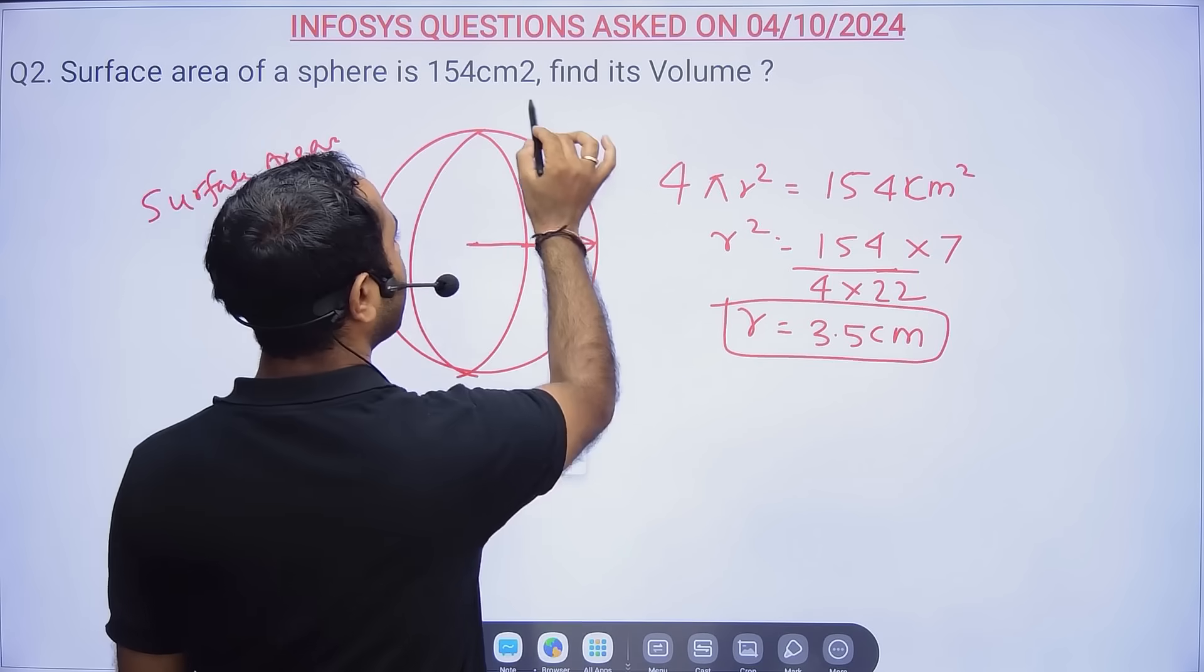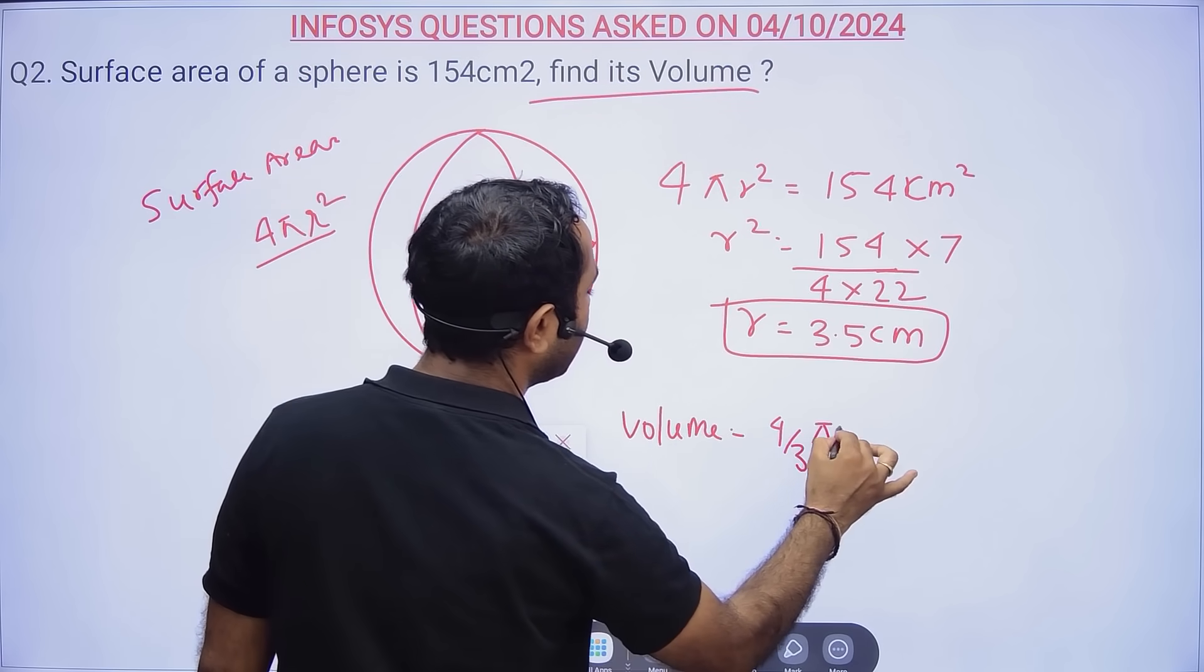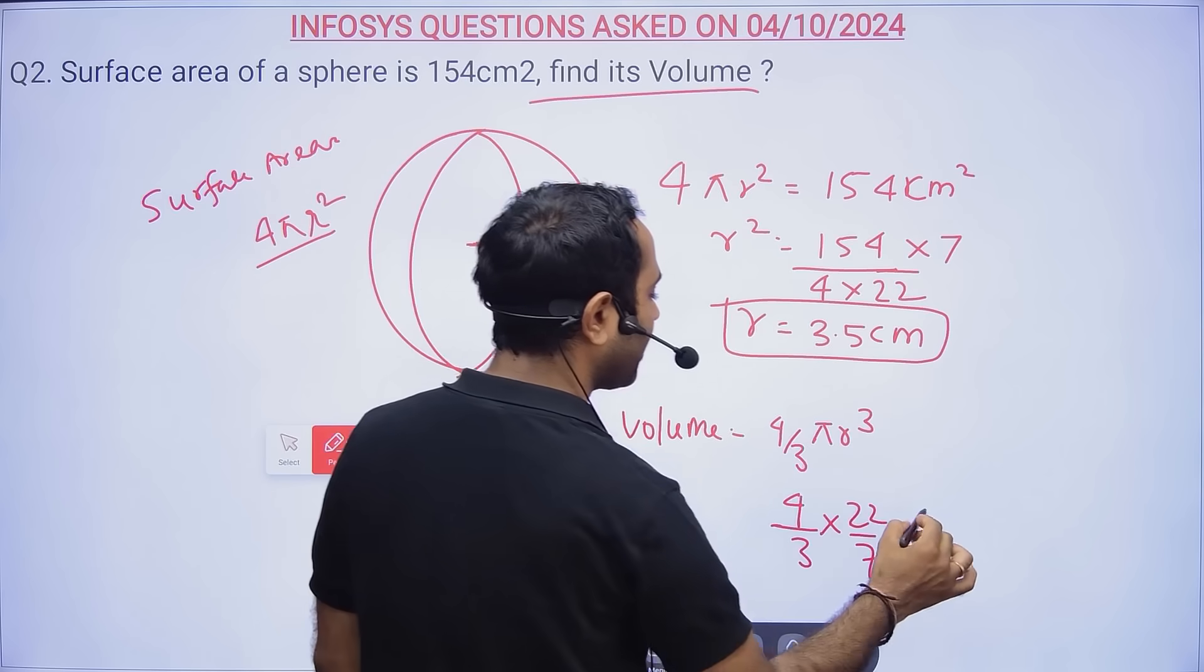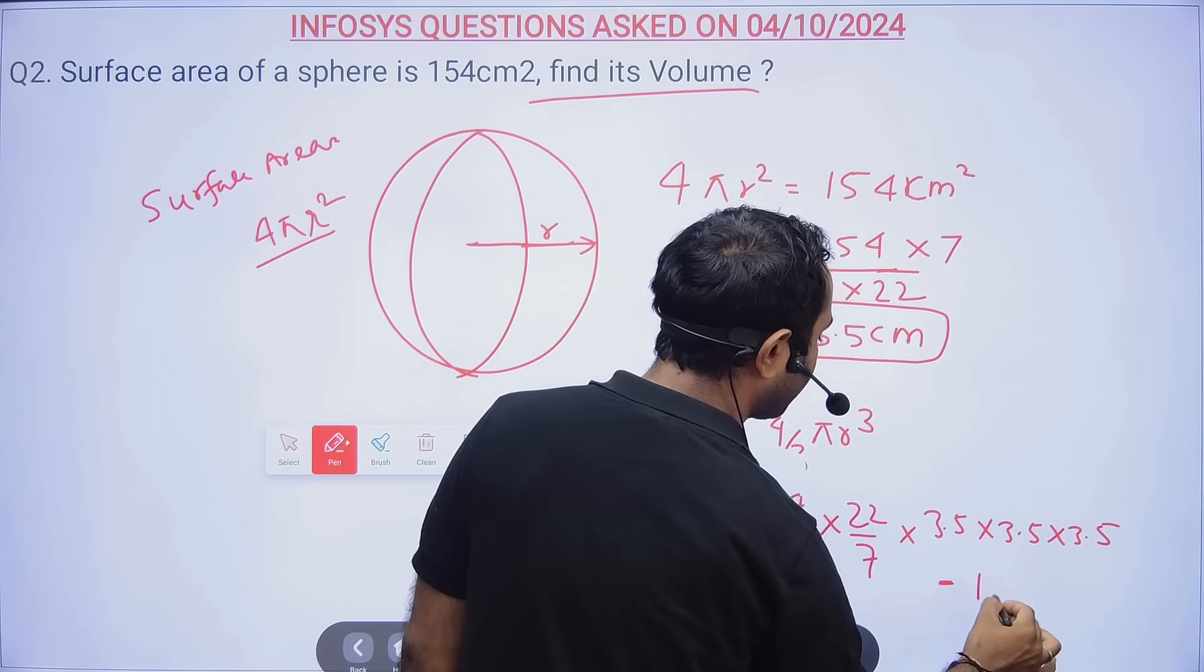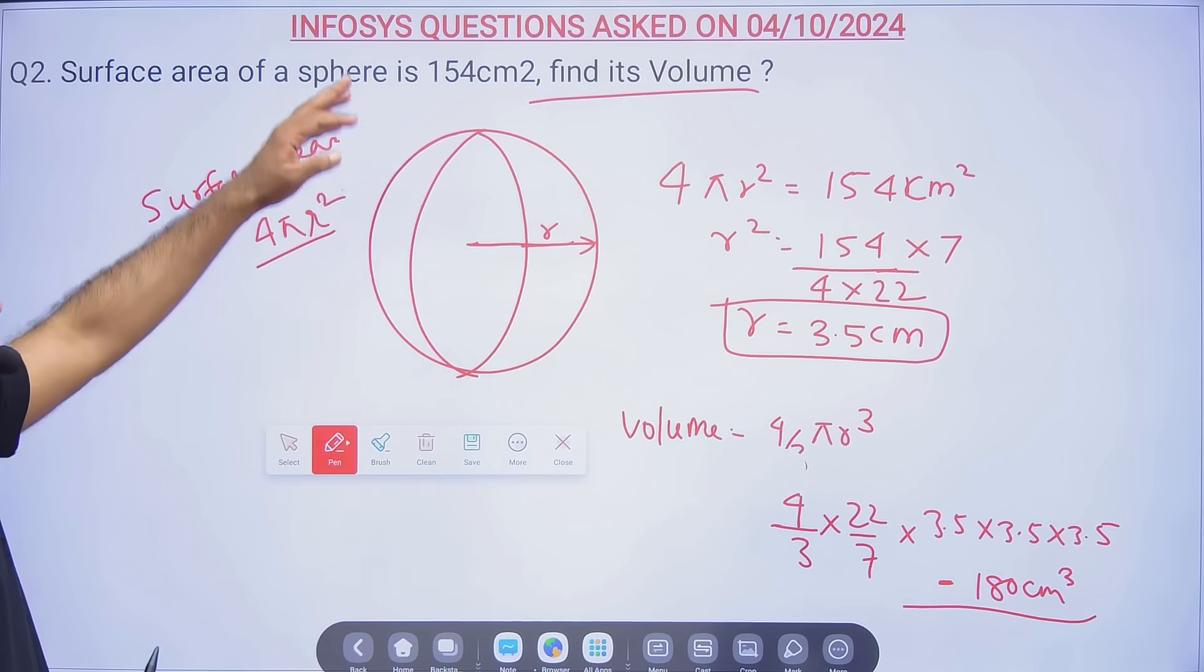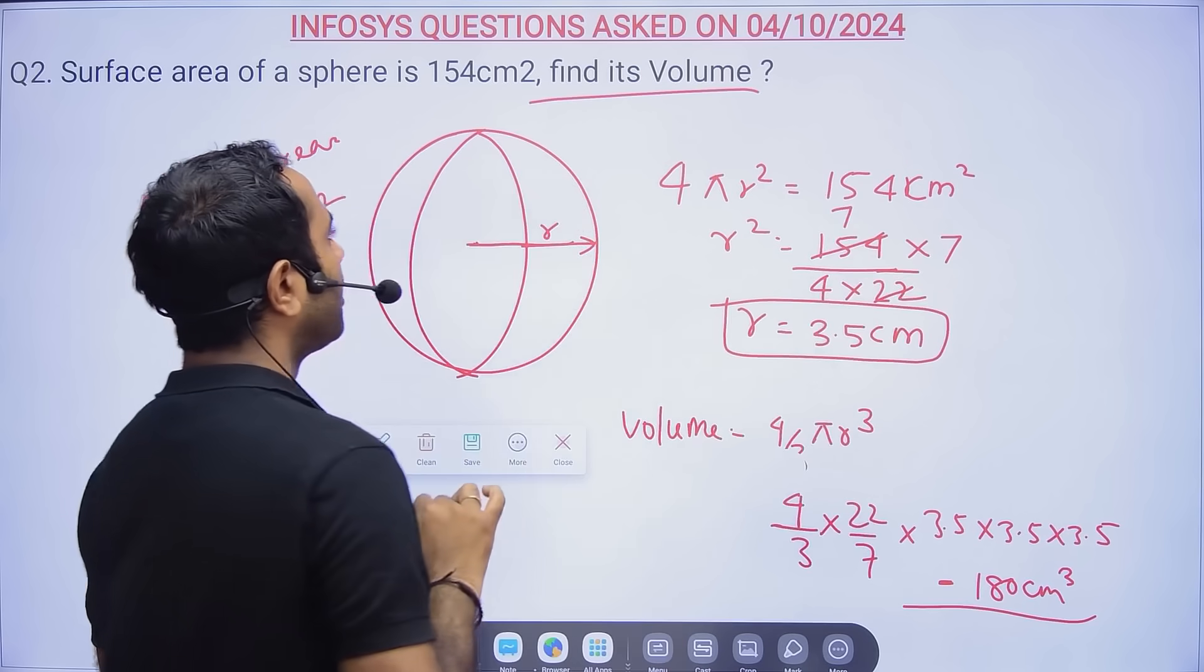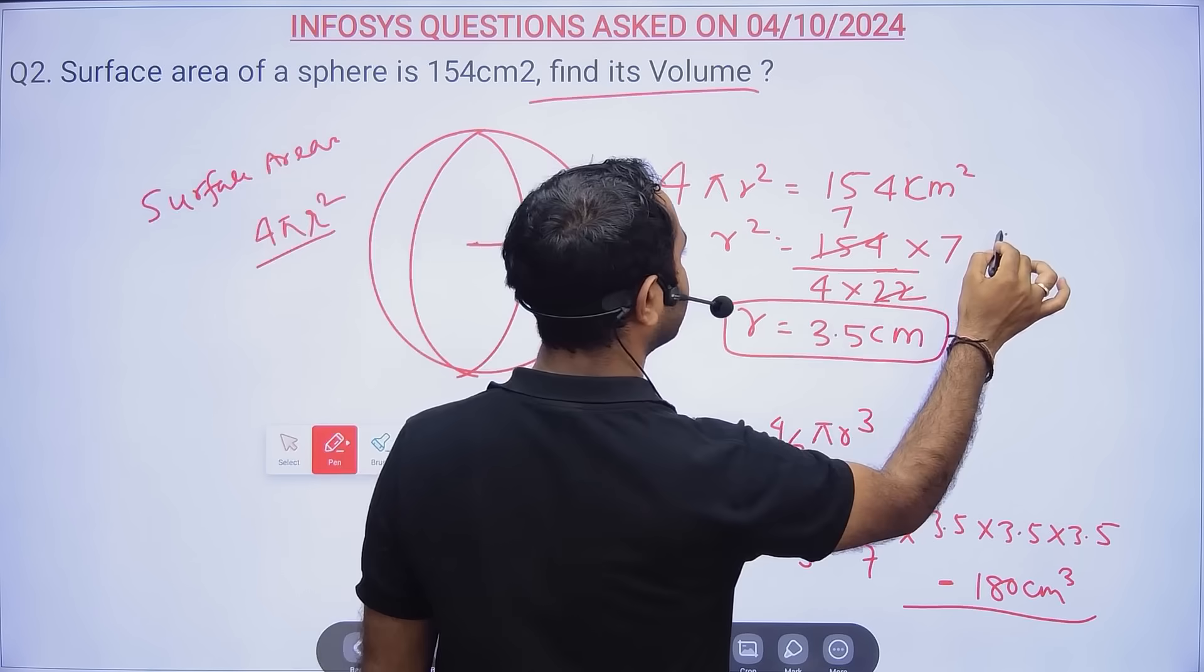Then they're asking to find its volume. Volume of a sphere will be 4/3 πr³. So 4/3 × 22/7 × 3.5 × 3.5 × 3.5. If you calculate, somewhere around 180 cm³ will be the answer. This was formula-based with some calculation.